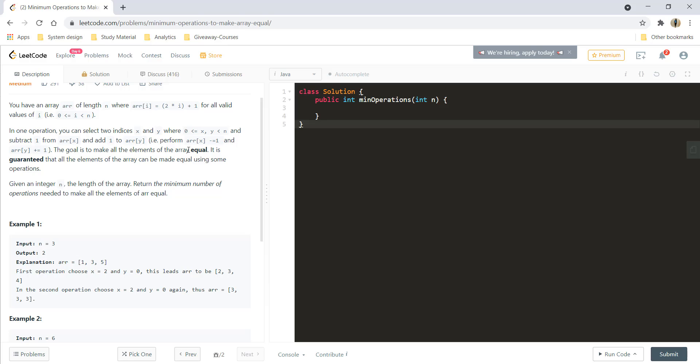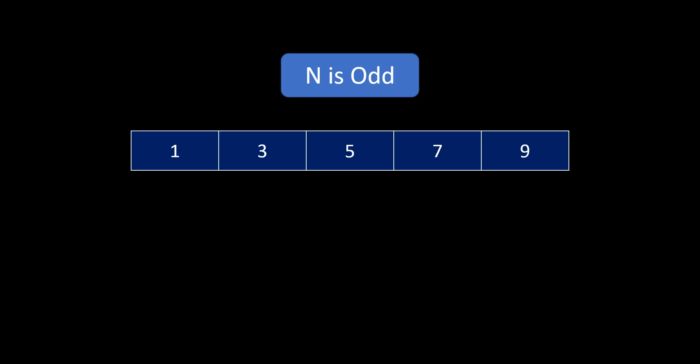Let's try to derive something from the conditions that are given to us. So, the first and the foremost thing is what is the value to which you will be changing all the other values and forming the equal array.